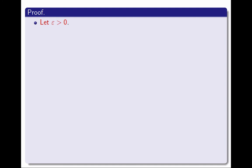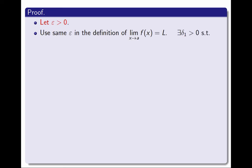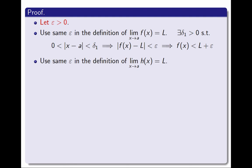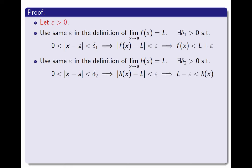So here it goes. I fix an arbitrary positive value of ε. Then I use that same value in the definition of the limit of f is L. I know there must exist a positive number delta 1, such that if the distance between x and a is between 0 and delta 1, then the distance between f and L must be smaller than ε. This, in turn, implies that f is less than L + ε. It implies more things, but this is the only piece I need. Similarly, I use the same value of ε in the definition of the limit of h is L. There must exist a positive number delta 2, such that if the distance between x and a is between 0 and delta 2, then the distance between h and L is less than ε. In particular, this implies that h is greater than L − ε.